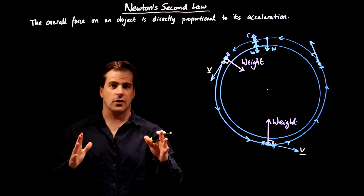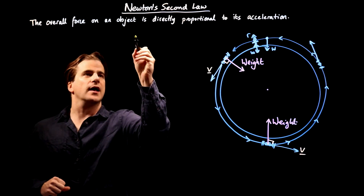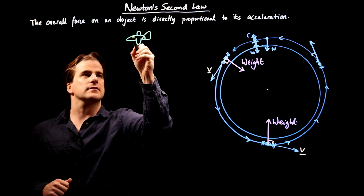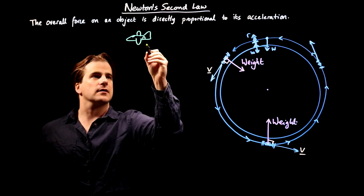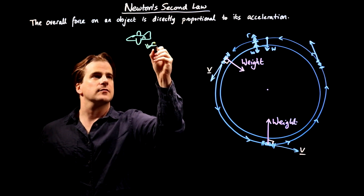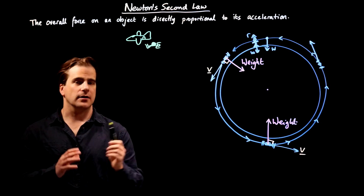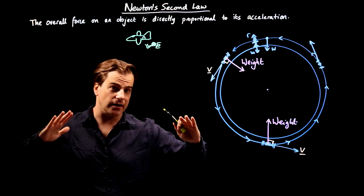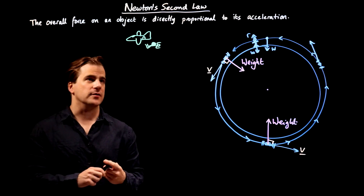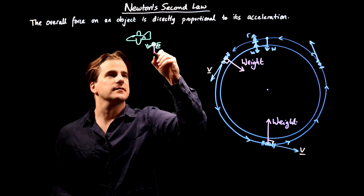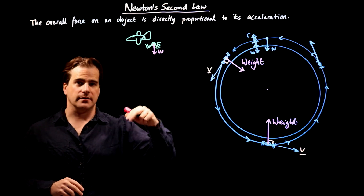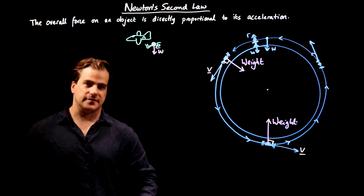Let's also look at the case of a skydiver. The skydiver jumps out of the plane. Initially, the moment he jumps out, he's not yet falling — so there's no air resistance on him upwards, but there is his weight pulling him down. The moment he jumps out, his overall force is equal to his weight, giving him a big force downwards, so he starts accelerating downwards. The overall force is directly proportional to its acceleration — overall force is weight, so his acceleration is downwards. He gets faster.